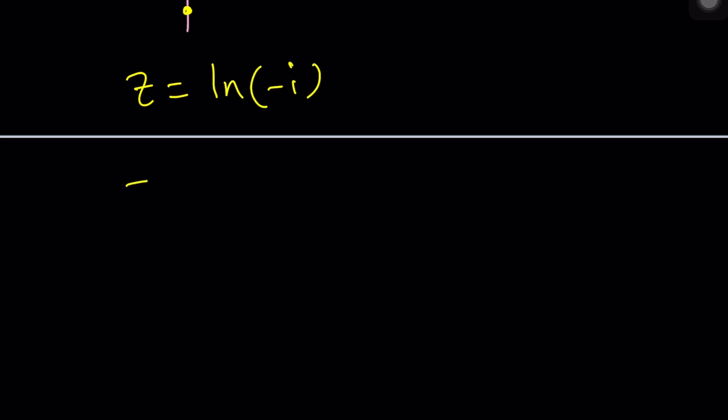So since negative i can be written as one times e to the power i times negative pi over two. I'm going to put the negative sign here and write it like this. And when I natural log it ln one is going to be zero and then I'm going to have i times pi over two. So that should be the ln of negative i.